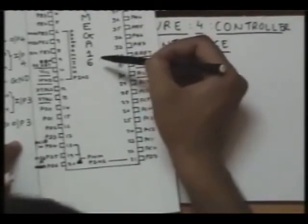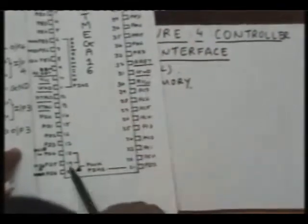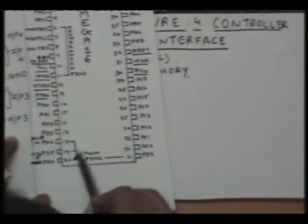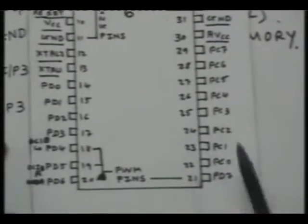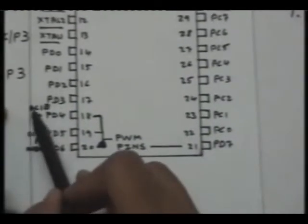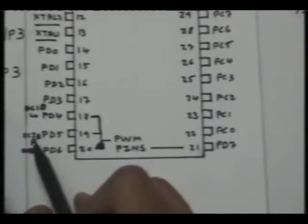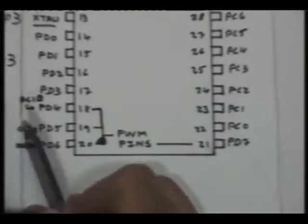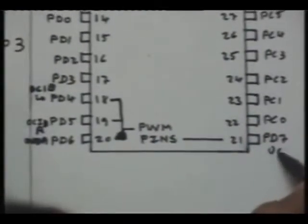Now this particular controller is having 3 PWM pins: pin number 18, 19 and 21 that are PD4, PD5 and PD7. PD4 is termed as OC1B, PD5 as OC1A and this as OC0.